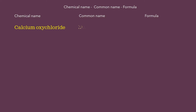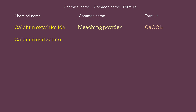Calcium oxychloride, common name bleaching powder, formula COCl2. Calcium carbonate, common name chalk, formula CaCO3.